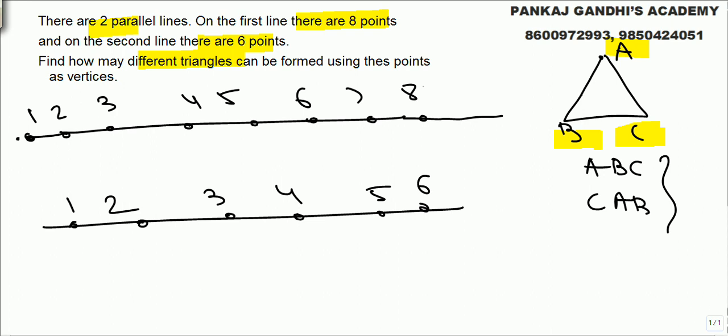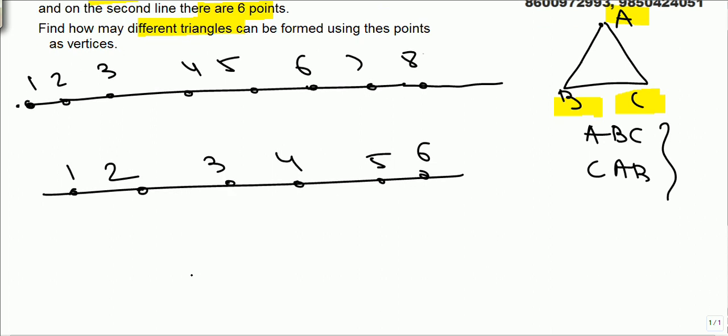How do we select? Obviously, out of n things r things. Out of eight points, two from here, and out of six, one from here. Or out of eight, one, and out of six, two.